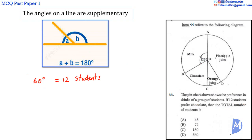To find the total number of students we find for the entire circle, we find for 360 degrees. If 60 degrees represent 12 students, then 1 degree would represent 12 over 60 students.